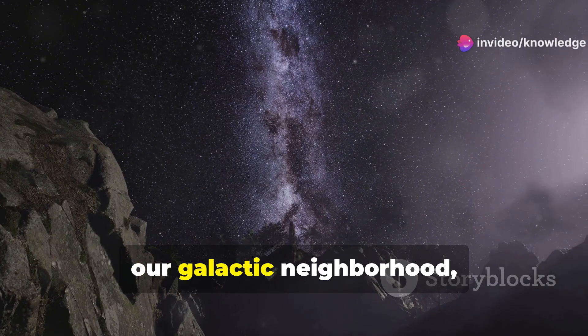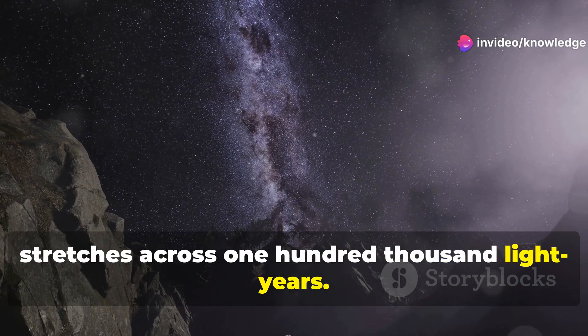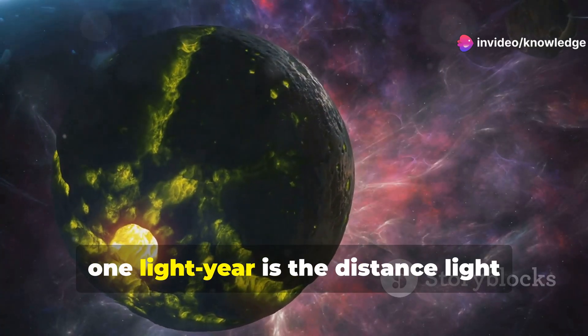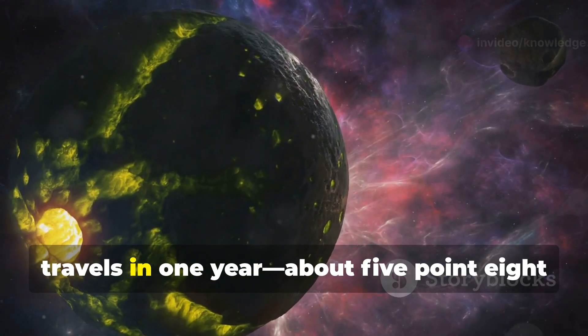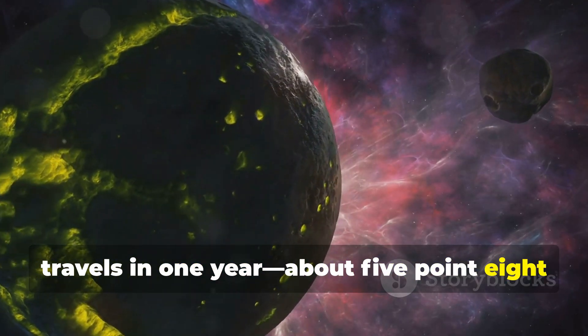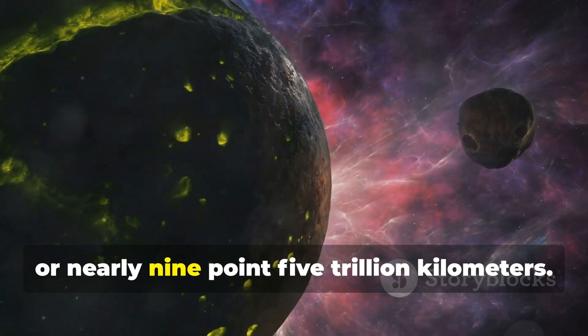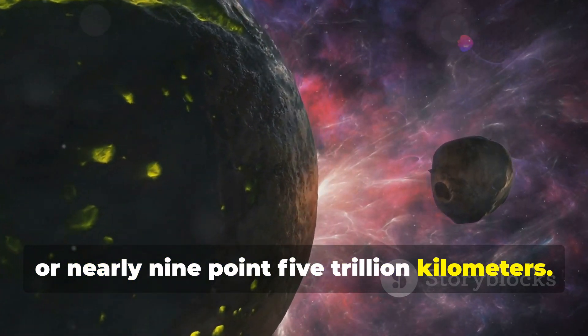But the true scale is beyond comprehension. The Milky Way, our galactic neighborhood, stretches across 100,000 light years. To put that into perspective, one light year is the distance light travels in one year—about 5.88 trillion miles, or nearly 9.5 trillion kilometers.